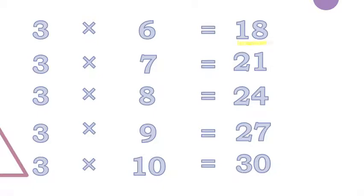Three sixes are eighteen, three sevens are twenty-one, three eights are twenty-four, three nines are twenty-seven, three tens are thirty.